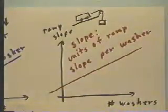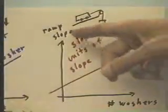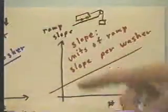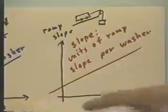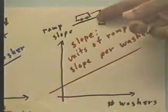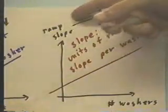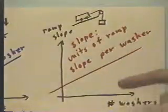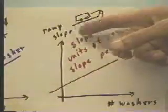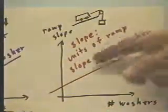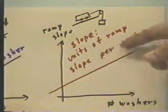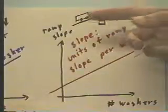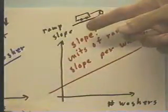The slope of this graph, graph of ramp slope versus number of washers, remember for each additional washer, we adjust the ramp slope until we get constant velocity, and then we have a point on the graph, a ramp slope and a number of washers. The slope of this is going to be the units of ramp slope per washer. So by how much do we change the ramp slope every washer?